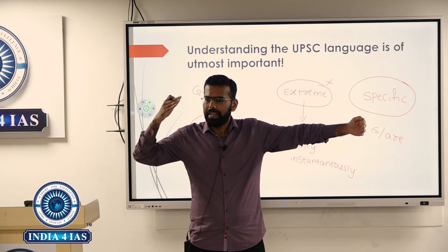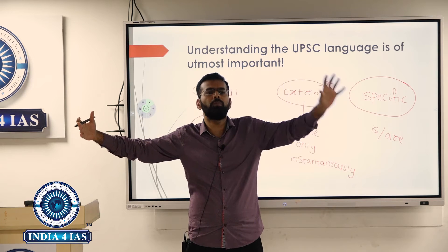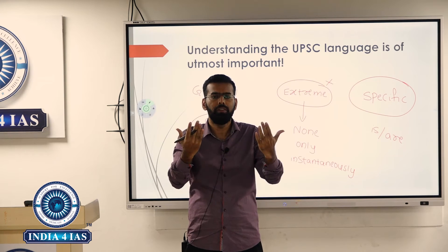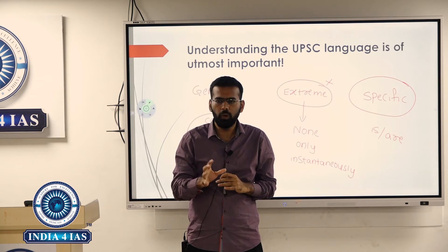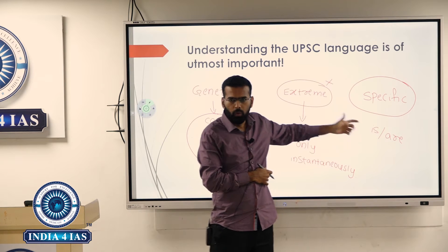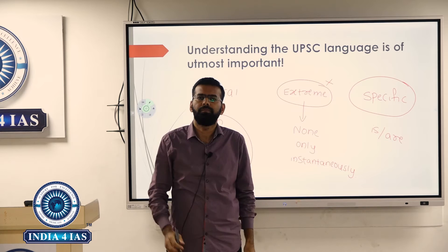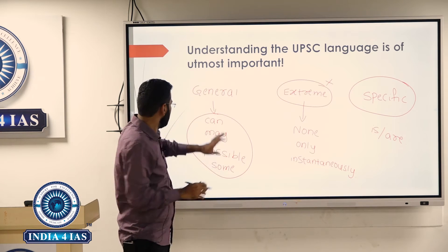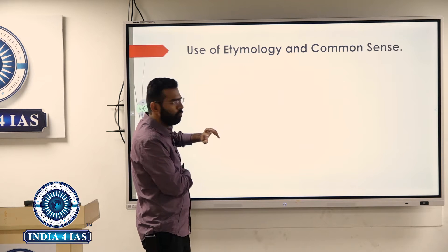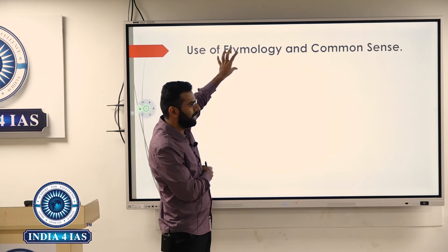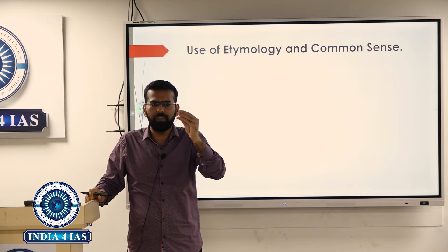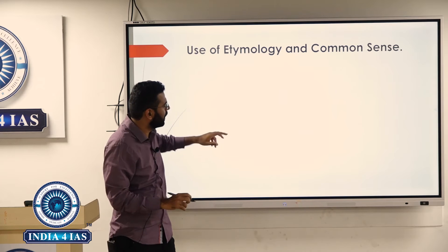When UPSC talks about possibility, it might be 1% or 99% — he is not sure, that's why he gives a possibility. When he is sure, he gives a specific statement. When he is talking assertively, the statement has an extreme meaning. This looks simple but in practice it is very different. Etymology is a concept where you comprehend the meaning of a term from the term itself. I will show practical questions where this can be used.